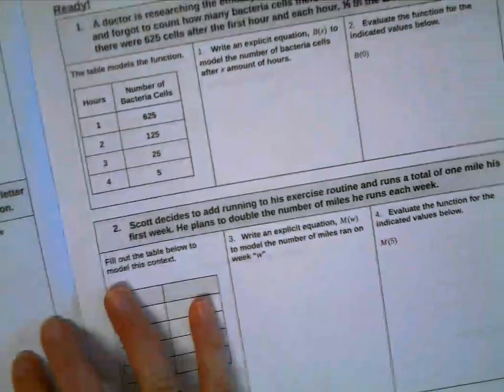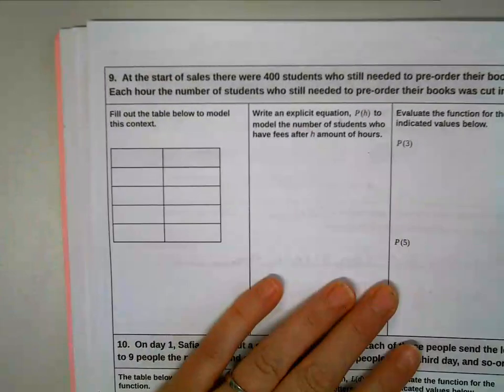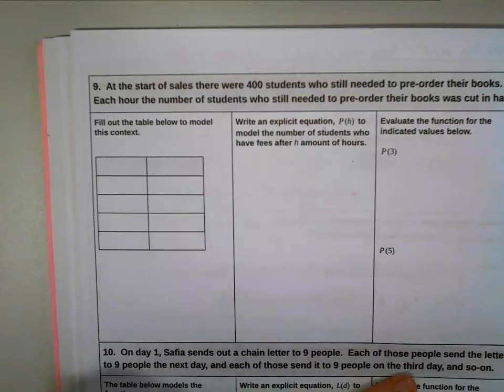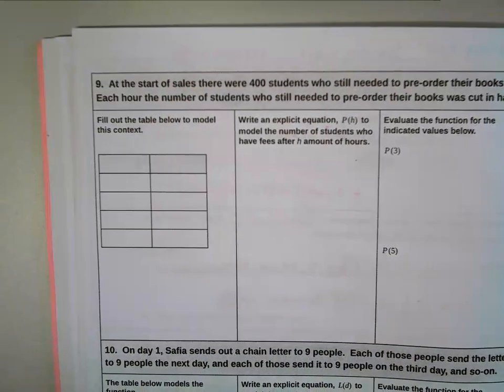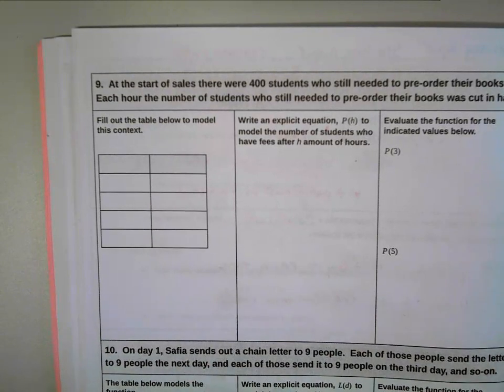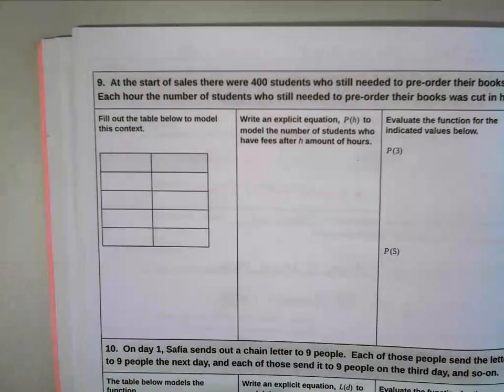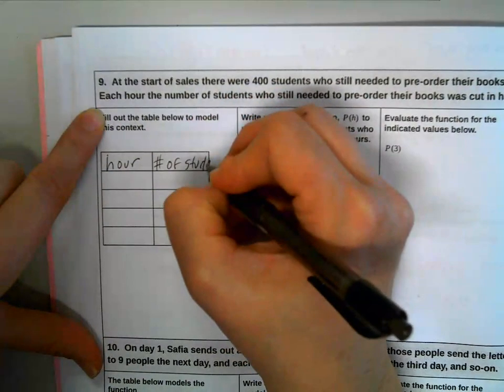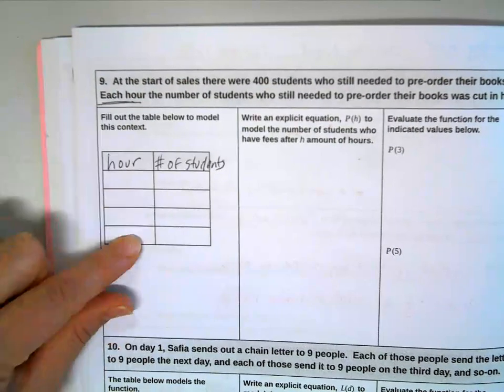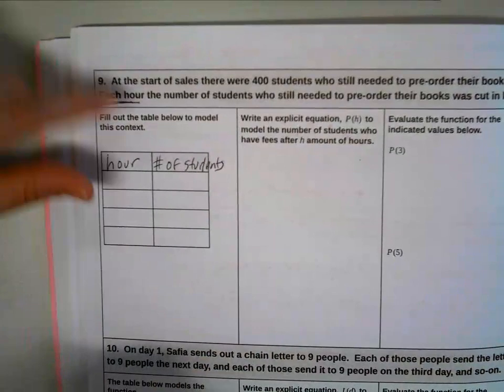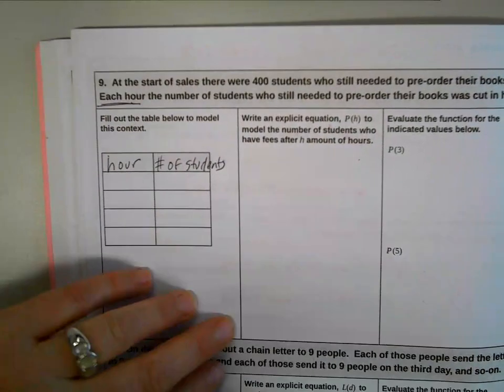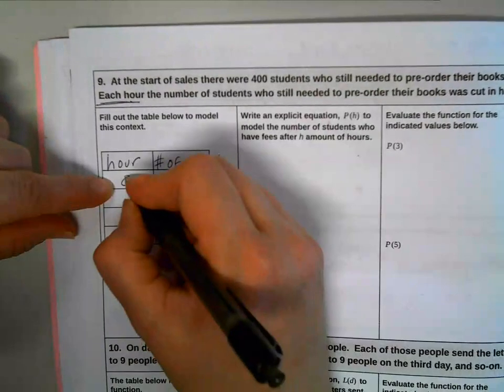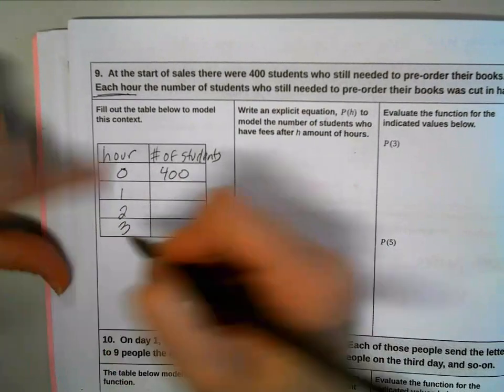All right, I think we have a couple examples in the back. At the start of sales, there were 400 students who still needed to pre-order their books. Each hour, the number of students who still needed to pre-order their books was cut in half. Okay, so we are talking about students is what we're measuring, and we're measuring them each hour. So I'm going to put hours here and number of students here. So at the start of sales, so I know I'm starting with 400. Is that 0 or 1? The start, so no hours have passed, so that's a 0. And then I'm going to count up by hours, we'll just count by 1s there.